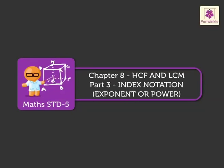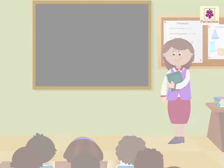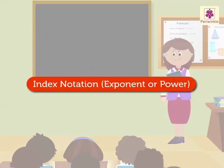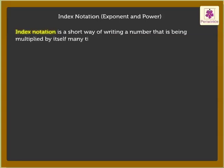Index Notation. Today, let us learn a new topic: Index Notation. Index Notation is a short way of writing a number that is being multiplied by itself many times. For example, instead of writing 4 into 4 into 4 into 4, it is easier to write it like this.